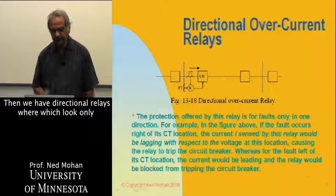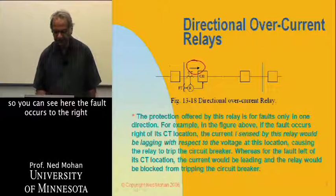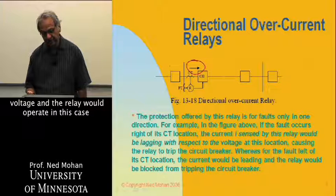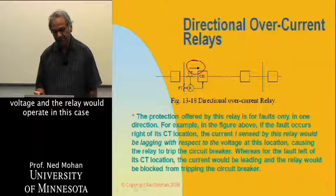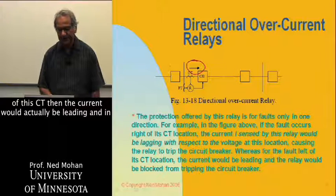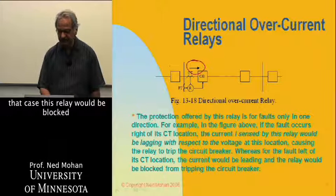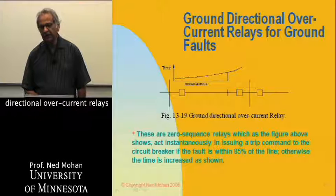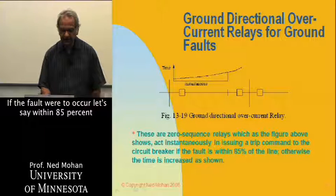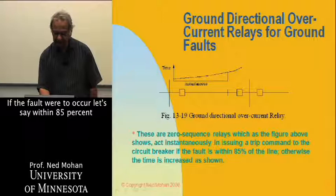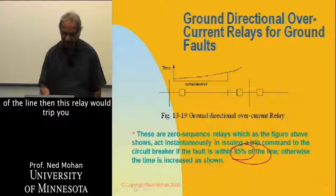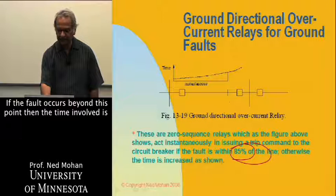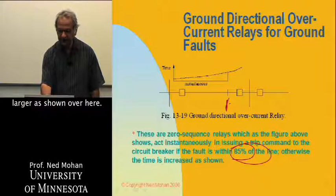Then we have directional relays, which look only in one direction. If the fault occurs to the right of the CT, the current would be lagging the voltage and the relay would operate. If the fault occurs to the left of the CT, the current would be leading, and in that case the relay would be blocked from tripping the circuit breaker. Then we have ground directional overcurrent relays for ground faults. If the fault occurs within 85 percent of the line, this relay would trip instantaneously. Otherwise, there is a time delay — if the fault occurs beyond this point, the time involved is larger.